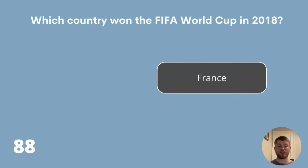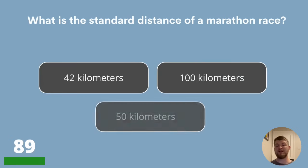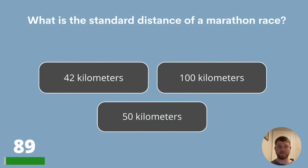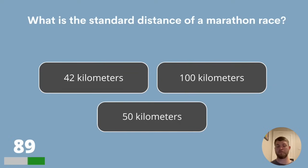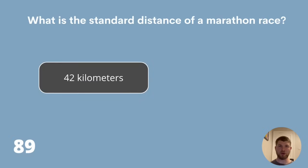Question 89. What is the standard distance of a marathon race? 42 kilometres, 100 kilometres or 50 kilometres? The answer is 42 kilometres.